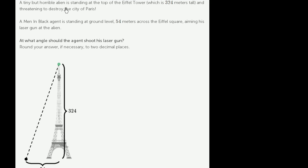A tiny but horrible alien is standing at the top of the Eiffel Tower, which is 324 meters tall, and threatening to destroy the city of Paris.